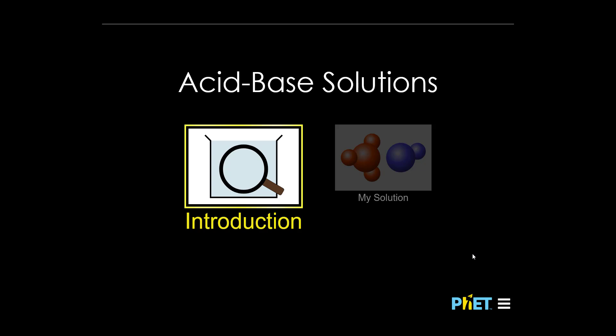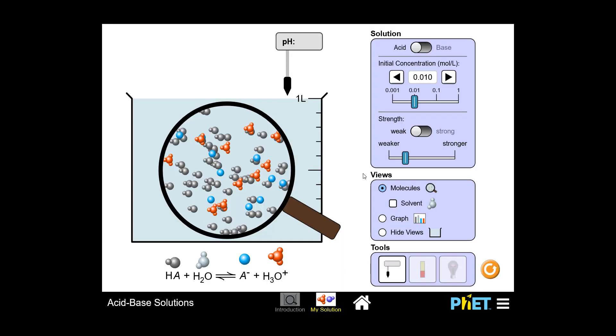In this next part, I'm going to walk you through some of the key features of the simulation that we'll be using today. First, I'm going to click on the My Solutions tab. When you first open up the simulation, you'll see a one liter beaker.